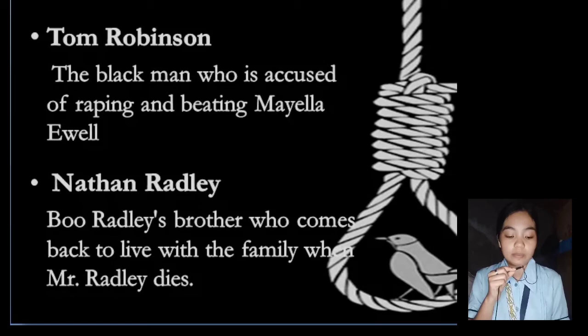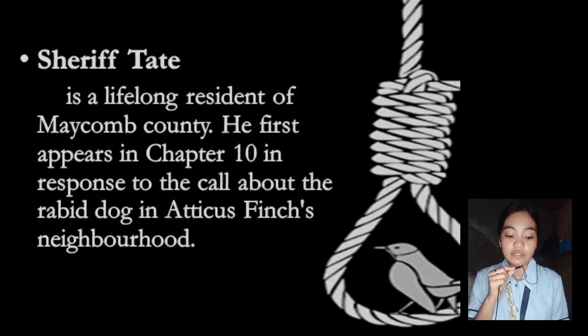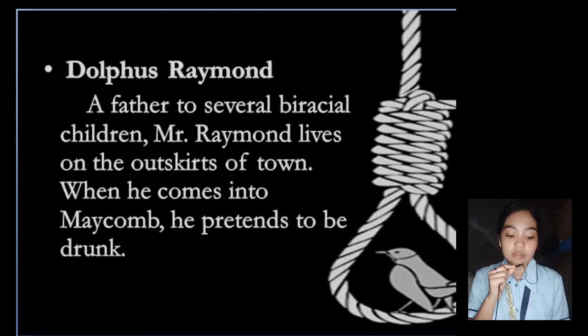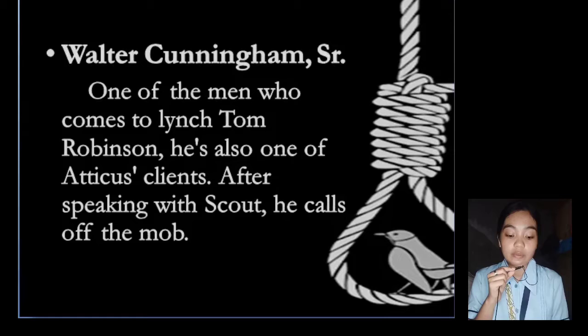Tom Robinson is the Black man accused of raping and beating Mayella Ewell. Next is Nathan Radley, Boo Radley's brother, who comes back to live with the family when Mr. Radley dies. Next, we have Sheriff Tate, a lifelong resident of Maycomb, who first appears in Chapter 10 in response to a call about a rabid dog in Atticus's neighborhood. Dolphus Raymond is the father of several biracial children who lives on the outskirts of town. When he comes into Maycomb, he pretends to be drunk. Lastly, we have Walter Cunningham Senior, one of the men who comes to lynch Tom Robinson.